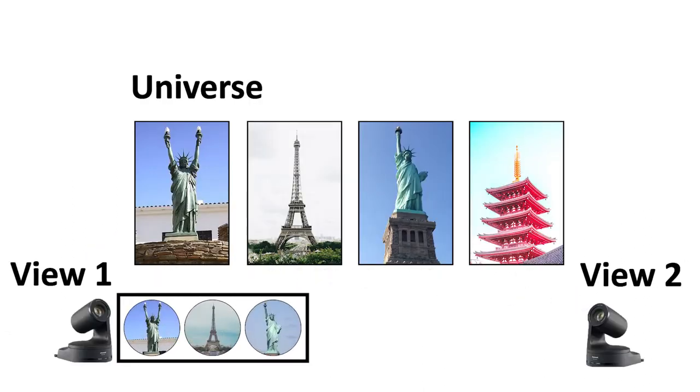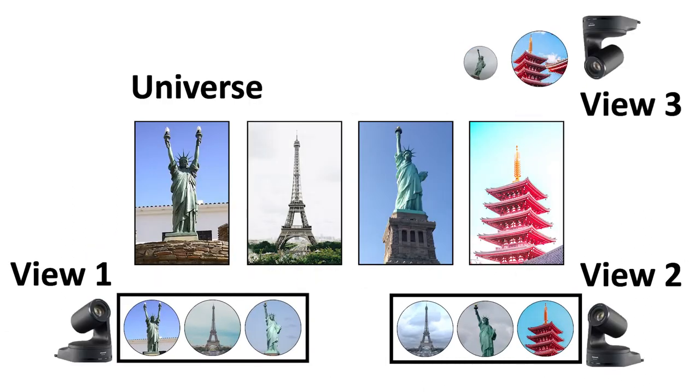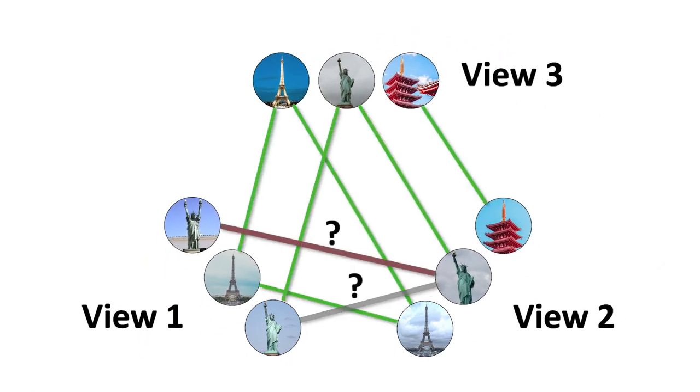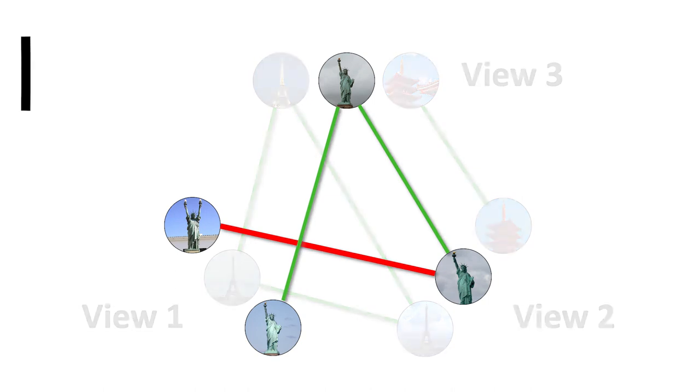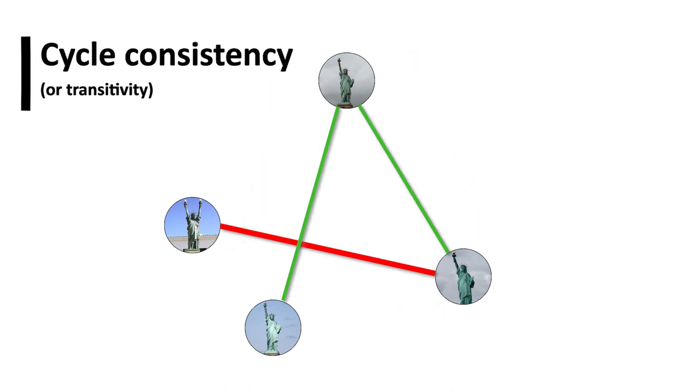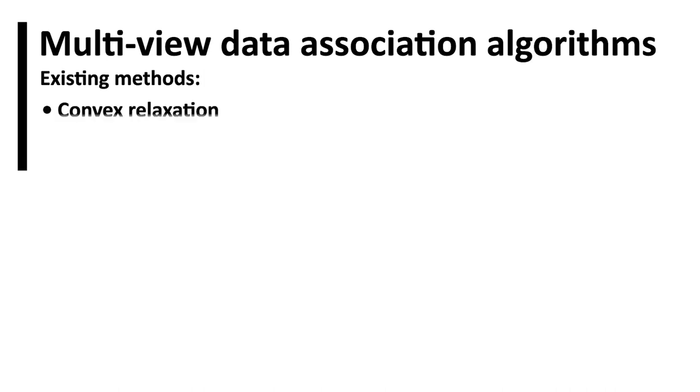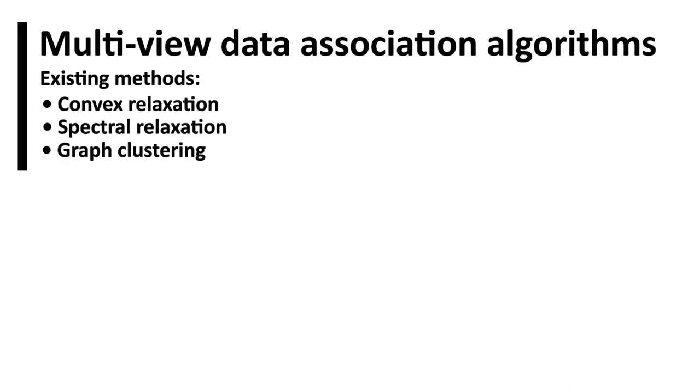Association of data between multiple views is a fundamental problem in many robotic applications. In practice, associations are often erroneous and inconsistent. The cycle consistency principle states that if items A and B, and B and C are associated, then A and C must be associated. This principle is leveraged by multi-view data association algorithms to rectify association errors.